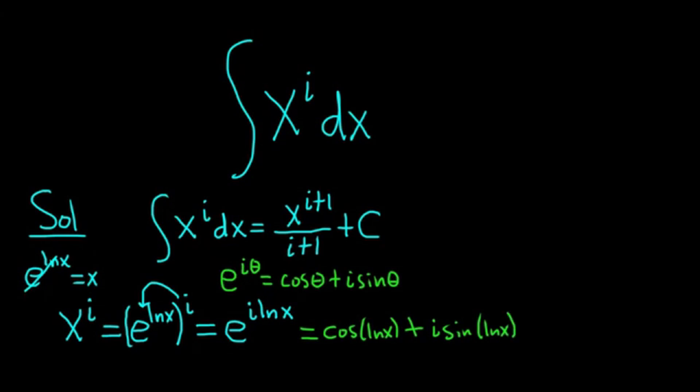So now what we've essentially done is we've rewritten x to the i. So I'm going to come back up here and show you exactly what we did. This is equal to the integral of cosine ln x dx plus, and I'm breaking it up. Cosine ln x dx,